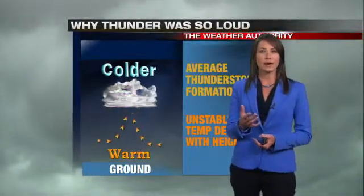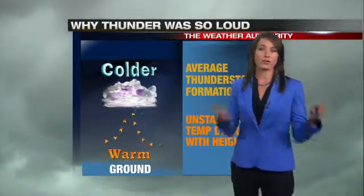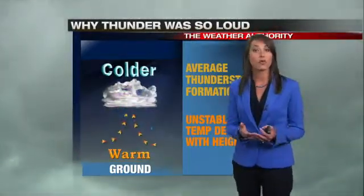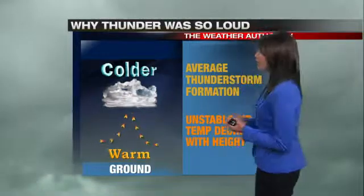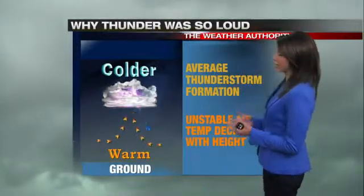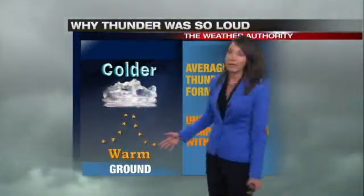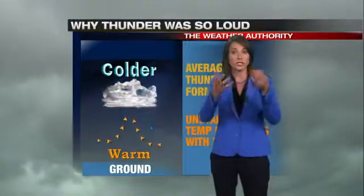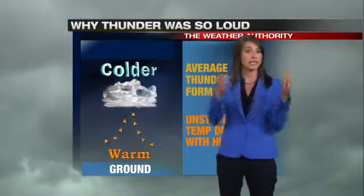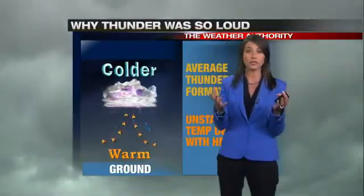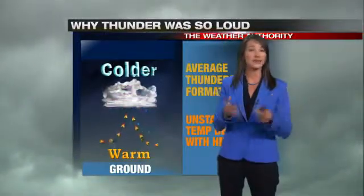First you need to know how a regular thunderstorm forms. Usually you have an unstable air mass, which means you have warmer air at the surface. Warm, moist air rises, condenses, and forms into a cloud.